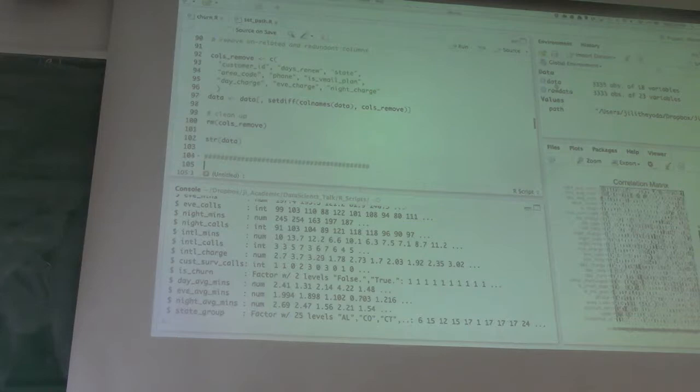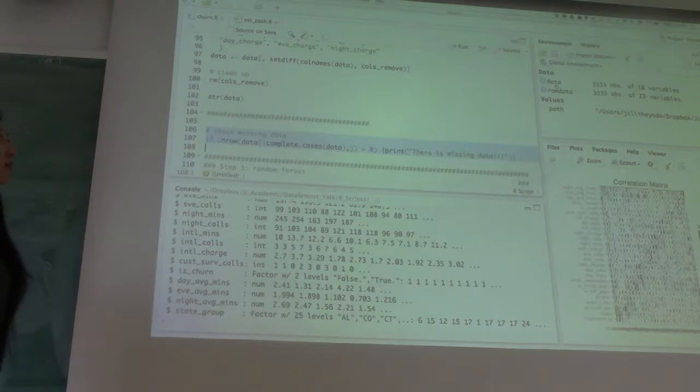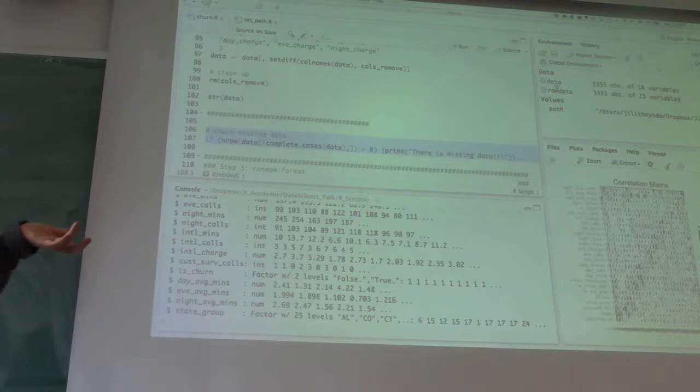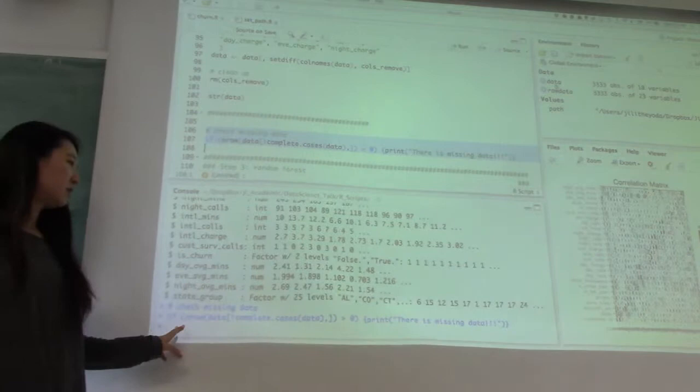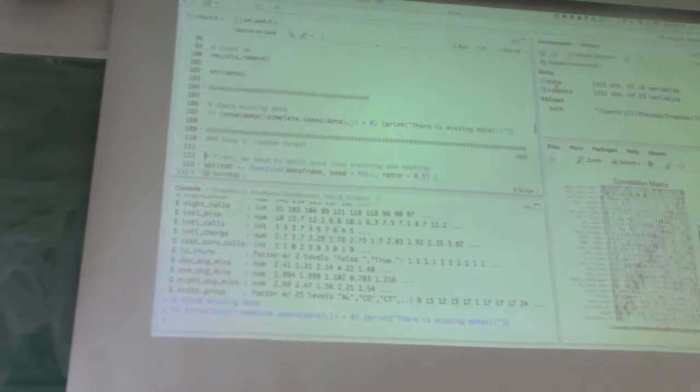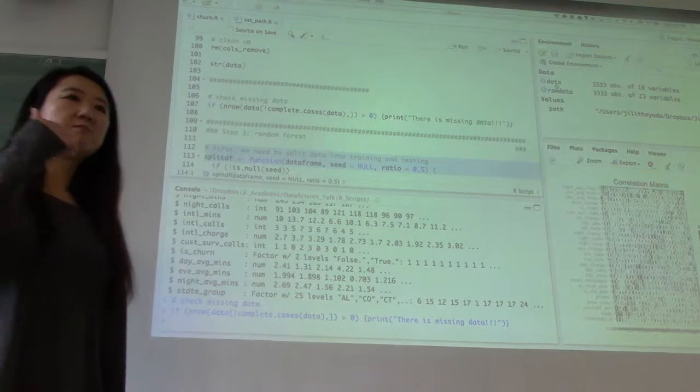There are things you want to check: missing data. In R, the complete.cases for data set gives you the missing data. If this number is greater than zero, I want to print out an error message. If I run this and I don't see any printout, it means there's no missing data. Now we're ready to go to the machine learning step.